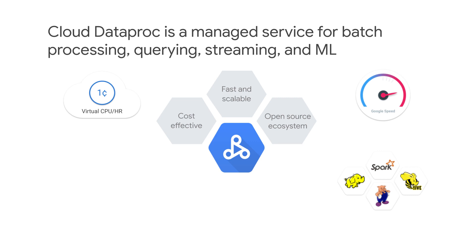Cloud Dataproc provides frequent updates to native versions of Spark, Hadoop, Pig, and Hive, so there's no need to learn new tools or APIs. It's possible to move your existing projects or ETL pipelines to Google Cloud without redevelopment. You can easily interact with clusters and Spark or Hadoop jobs through the GCP console, the Cloud SDK, or the Cloud Dataproc REST API. When you're done with the cluster, simply turn it off so money isn't spent on an idle cluster.